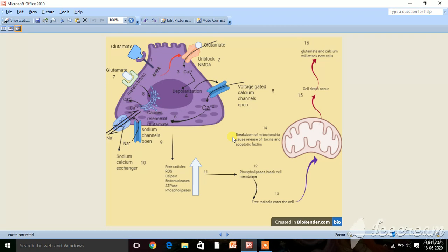Coming to the definition, excitotoxicity is a pathological process by which neurons are damaged and killed by over-activation of receptors for glutamate, such as NMDA, AMPA, and metabotropic receptors.